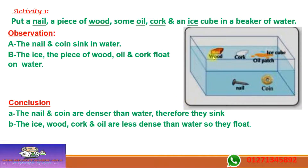That is why desks are made of wood — if a desk were made of iron it would sink in water. Wood floats because its density is less than water. That is why ship hulls are made of wood — so they float on water.